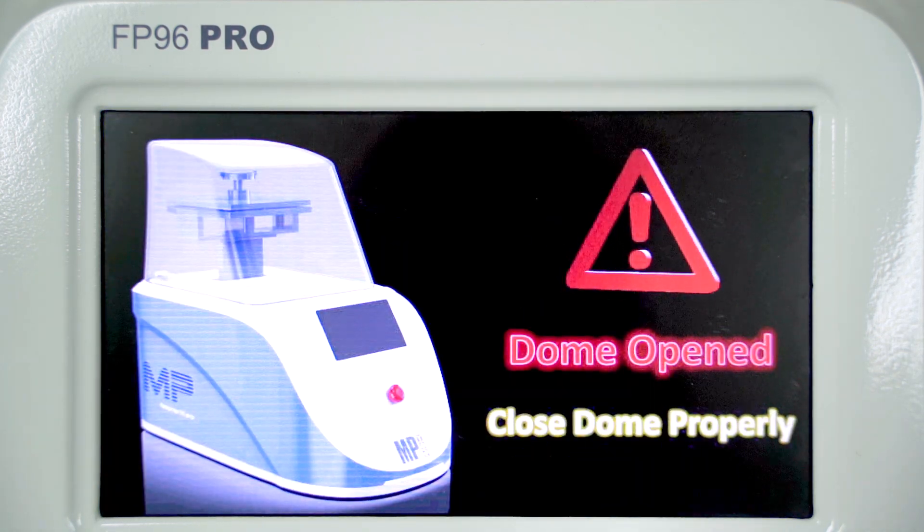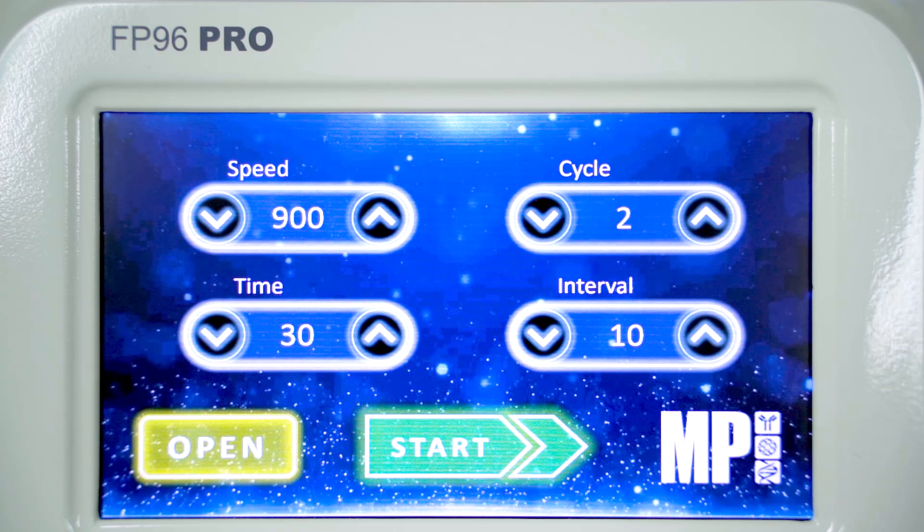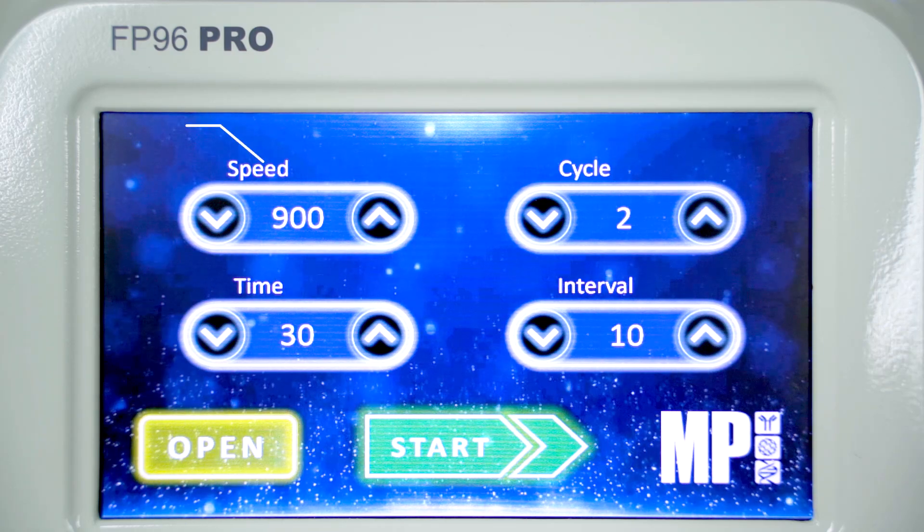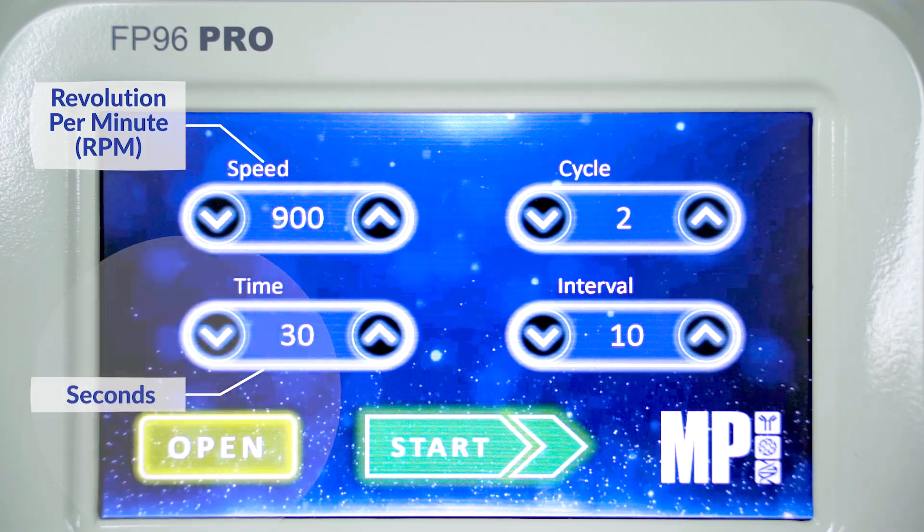The interface displays the program screen with various parameters. The speed indicates the RPM of the machine during operation, while the time is displayed in seconds.